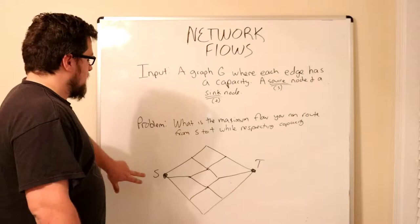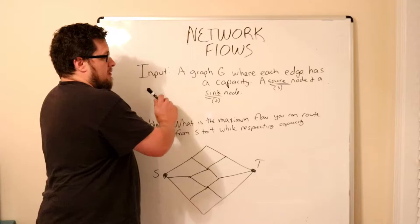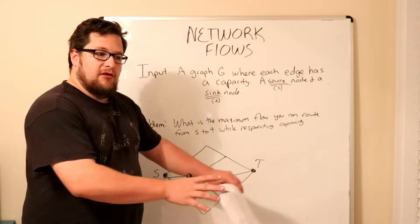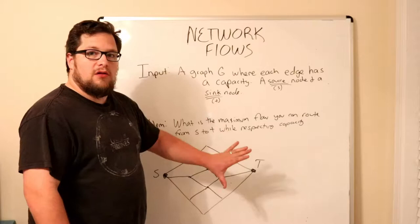We have a source node which we're going to call S. So if you ever see me say S throughout this, we're talking about where the input is coming in from. You're going to hear the term sink or sink node, or you might just see me reference that as T. That is where the flow needs to end at. That's where the exit is.